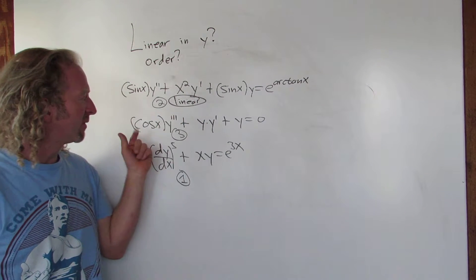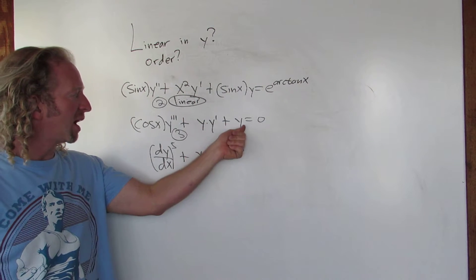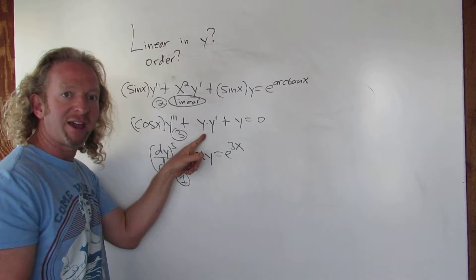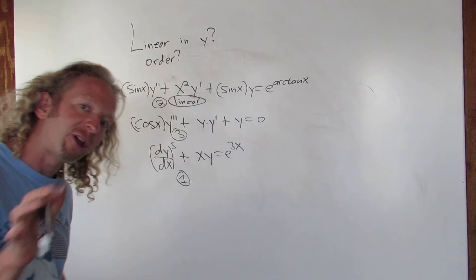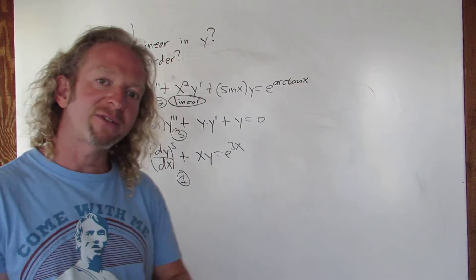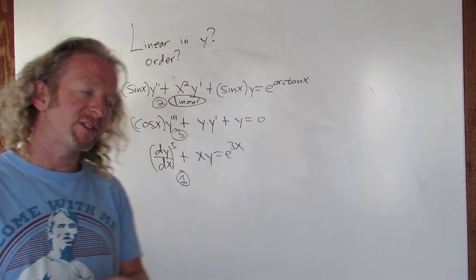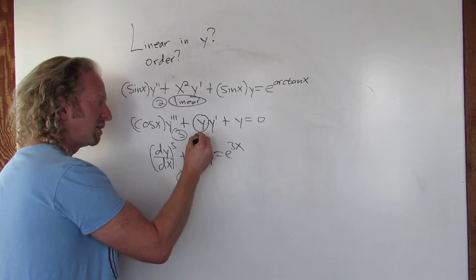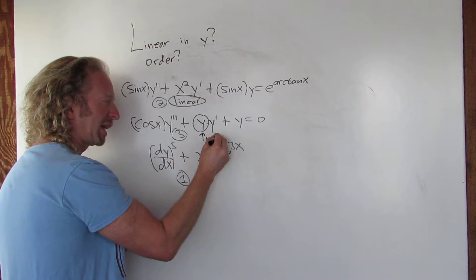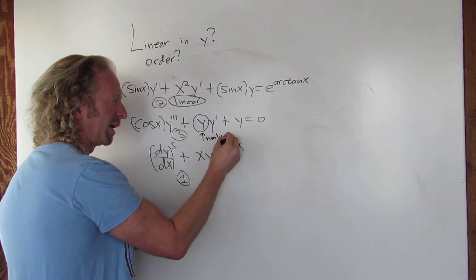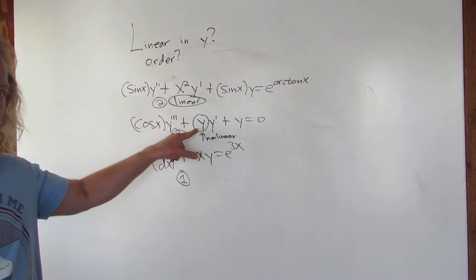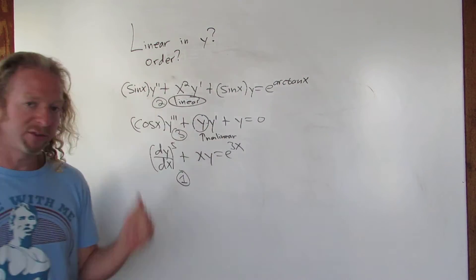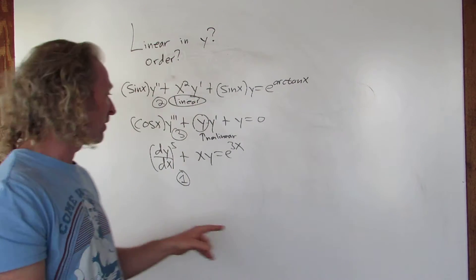In this case, same thing — y and all its derivatives are to the first power, but we'll fail. In front of y and all its derivatives we have to have pure functions of x. Right here, this little piece makes it nonlinear — that's not a pure function of x, it's a function of y in front of the first derivative. That destroys the linearity.